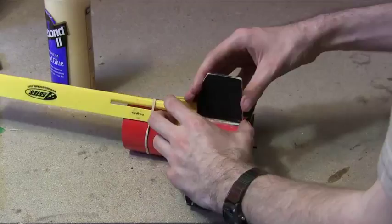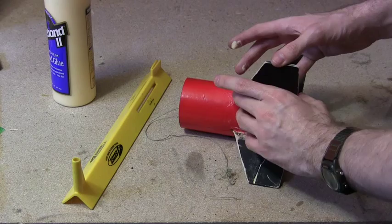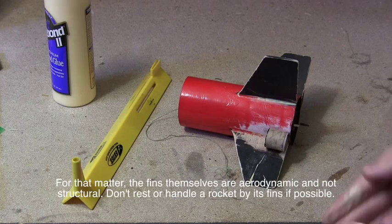After gluing the fins on, we apply little fillets of glue to the corners to reduce their drag. This glue doesn't serve a structural purpose, but an aerodynamic one. Since we only need to make it so the corner isn't sharp, we can wipe a finger along the fillet to remove any excess glue.